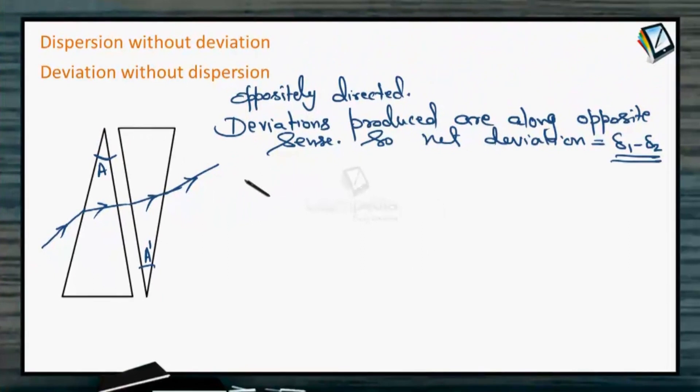Here what we can write is δ for violet is equal to—you can understand that δ for violet in the first prism would be this. As we know, the formula for δ that we are using in case of thin prism is (μ - 1) × A. So μ_violet minus 1 into A will be the deviation produced by the first prism, minus the deviation produced by the second prism.